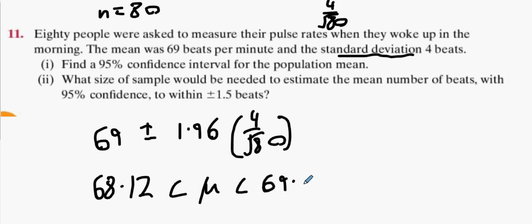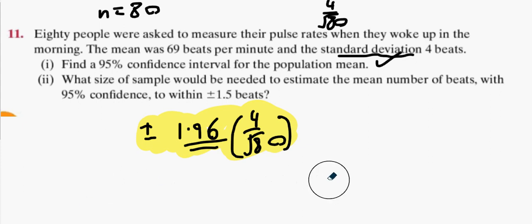You put that into the calculator and you'll get 68.12 less than mu less than 69.68. Here's the tricky question: what size of sample would be needed to estimate the mean number of beats with 95 percent confidence to within plus or minus 1.5? So that indicates it doesn't know the n value.